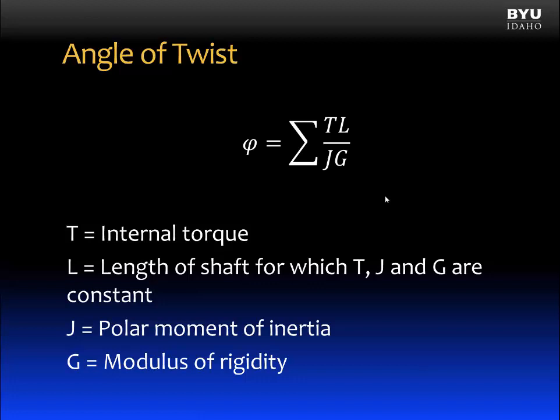When we have a shaft which is subjected to several torques over discrete intervals, or J or G abruptly change, we can use this form of the equation, where we sum up individual angles of twists of sections of the shaft to get the total angle of twist in the structural member.